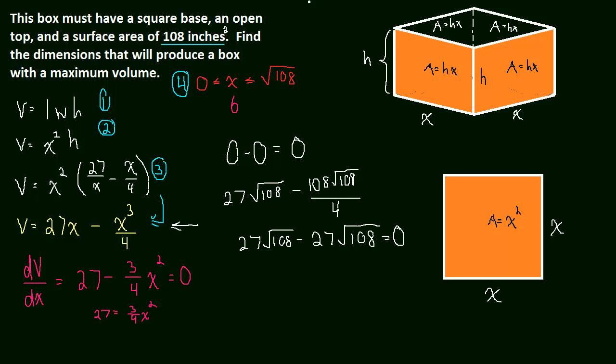So this function now probably looks something like this. Since we've been talking about what it looks like, now we've verified that it looks like this. When x is 0, you have 0 volume. When x is the square root of 108, you have 0 volume. And so 6 must be our maximum. We know we can't have negative volume, so it doesn't go down. So 6 is our maximum point.